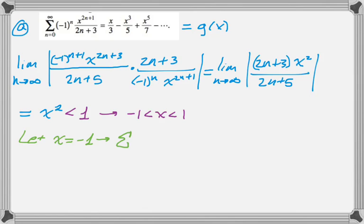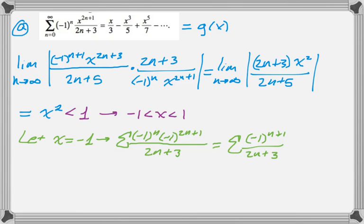So now we need to test some endpoints, so if we let x equal negative 1, we end up with the summation of negative 1 to the n, negative 1 to the 2n plus 1, and then all over 2n plus 3. Negative 1 to the 2n plus 1, negative 1 to the 2n is just 1, so we can kind of disregard that. So we really have negative 1 to the n times negative 1 to the first, so that gives us this series, negative 1 to the n plus 1 over 2n plus 3, and that's a convergent series by the alternating series test.